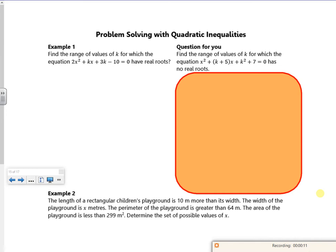So it says find the range of values for that equation to have real roots. Real roots is a mixture of two real roots or one real root, so I'm looking where b squared minus 4ac is greater than or equal to zero.